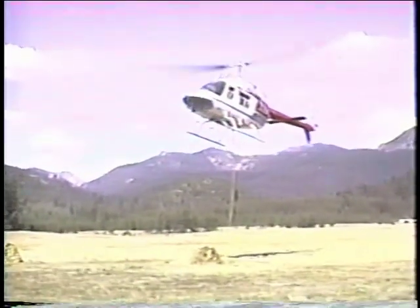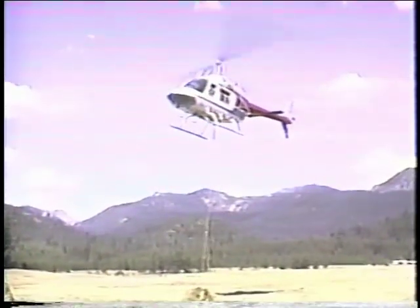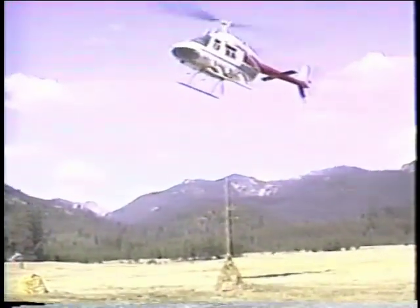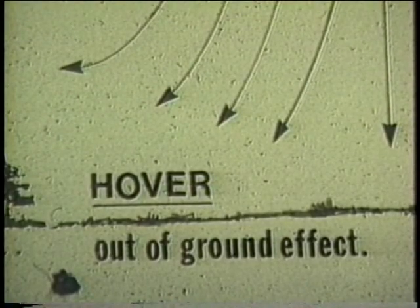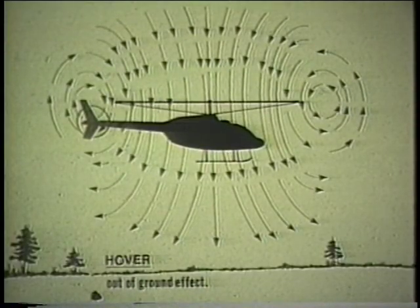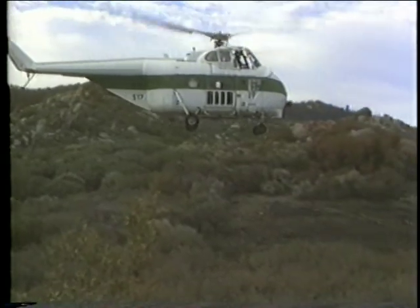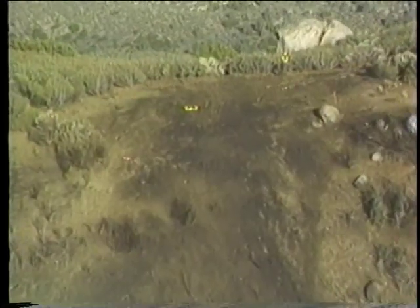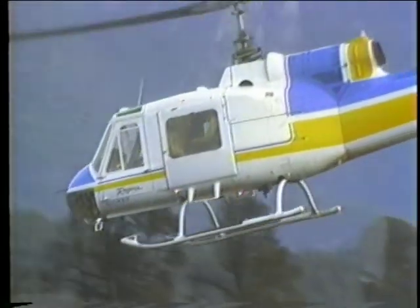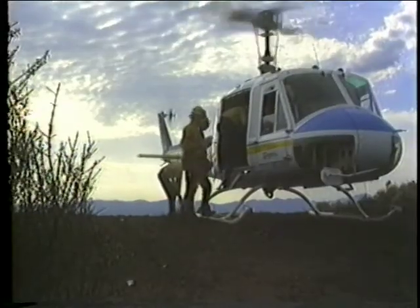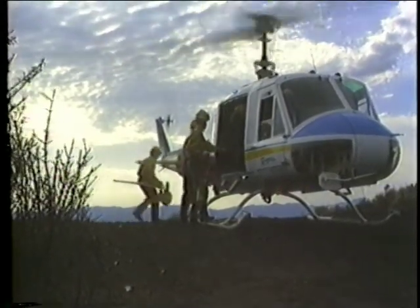Once the helicopter exceeds the one-half rotor diameter distance above the ground, the cushion of air dissipates and you are now hovering out of ground effect, HOGE. To maintain a hover, the helicopter must now use considerably more power, reducing its effective payload. The helicopter is much more efficient when you can use in-ground-effect sites for your takeoffs and landings. And if you must use an out-of-ground-effect site, the number of people or pounds of cargo you want to carry may have to be reduced drastically.